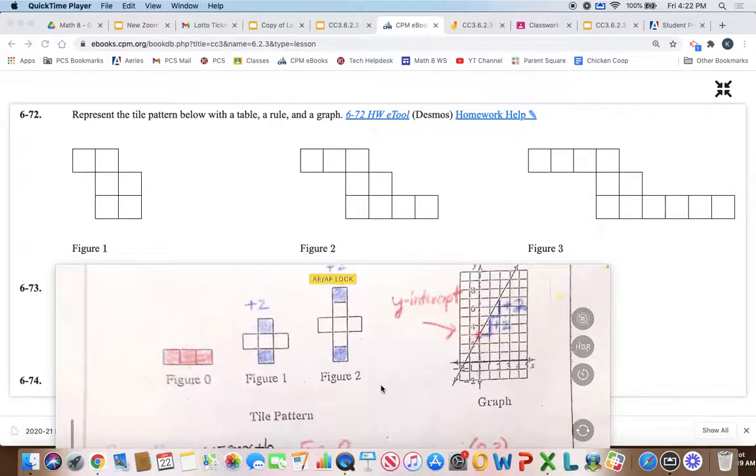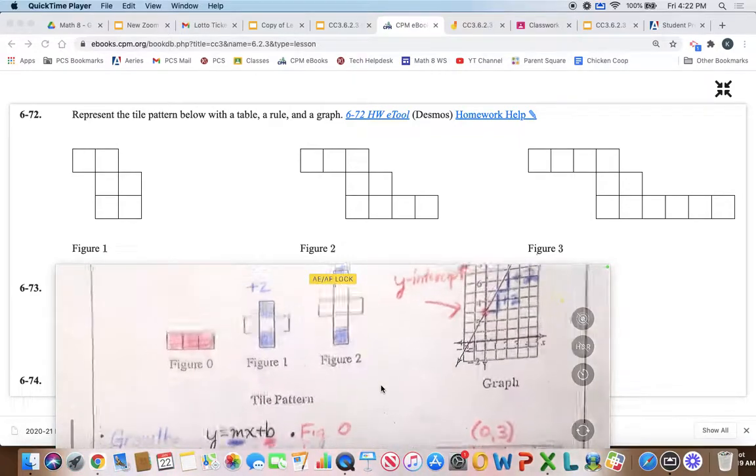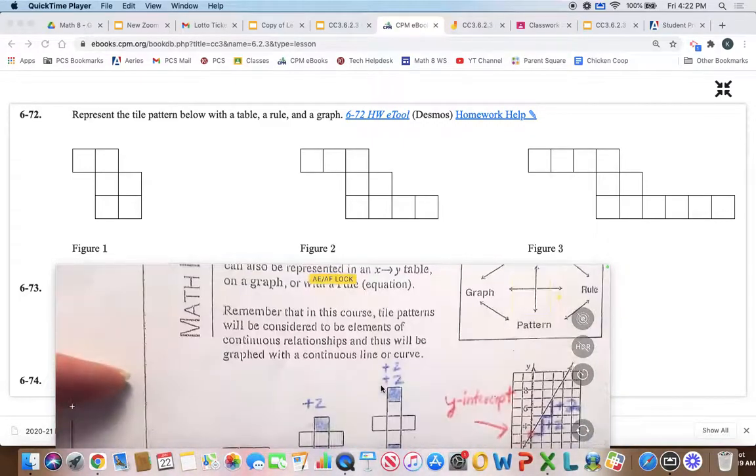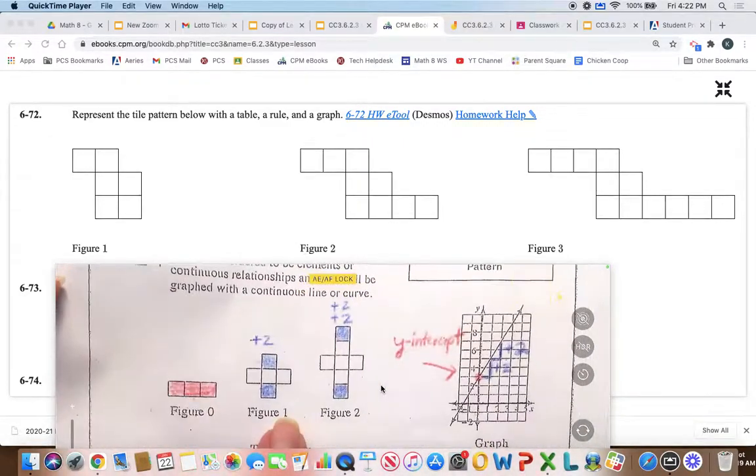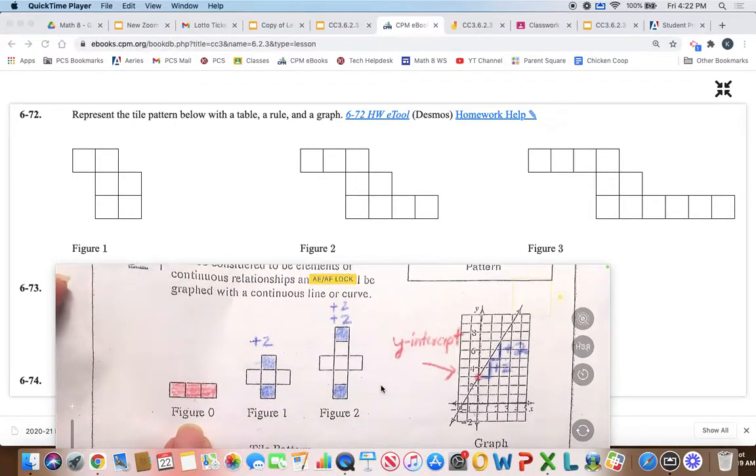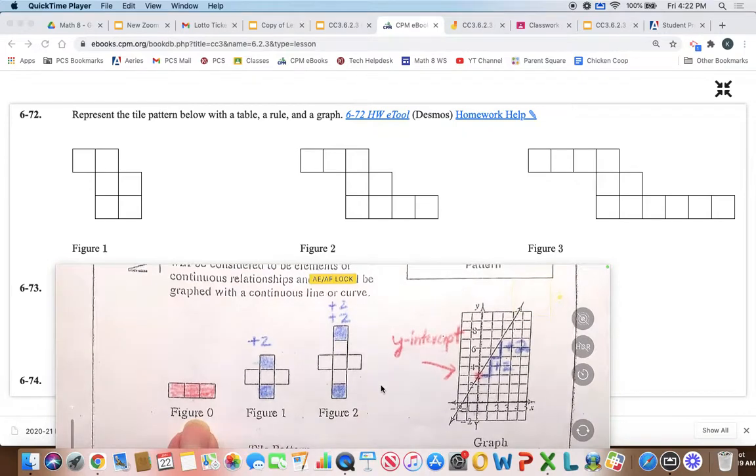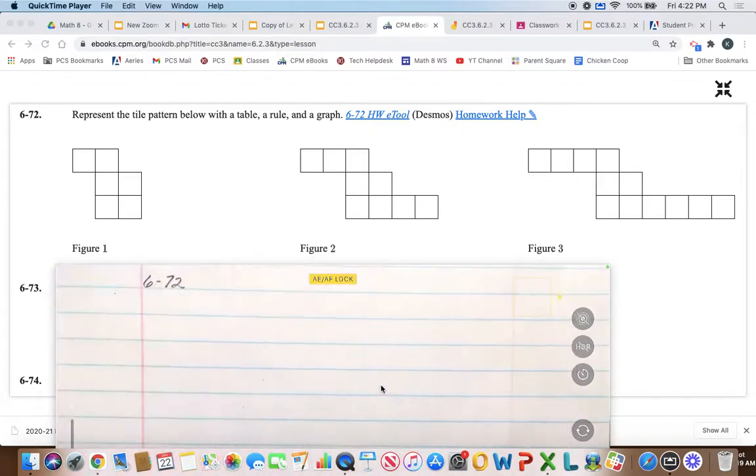Okay, so we're going to do all of those, but first we're going to start by figuring out what is the growth, and then can we work backwards and find out what figure zero is. Okay, so the best thing we can do now is we can count up these.